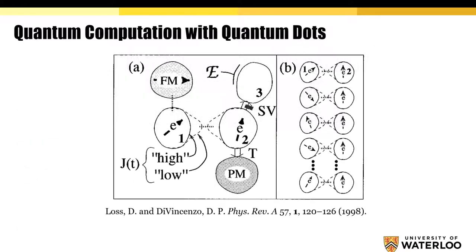One such approach proposed by Loss and DiVincenzo argued that using the spins of individual electrons trapped in quantum dots as qubits, the quantum analog of a classical bit, could allow us to perform such quantum algorithms.